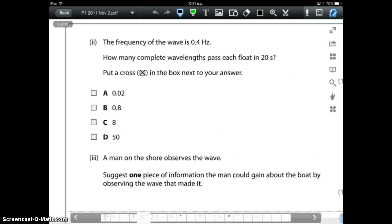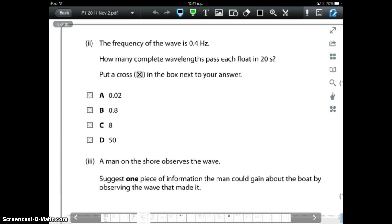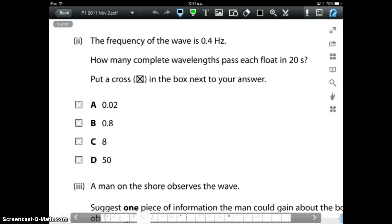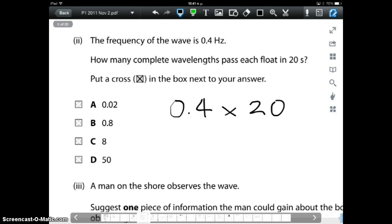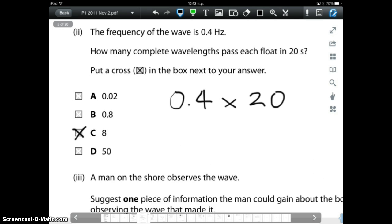Continuing with the question. The frequency of the wave is 0.4 hertz. How many complete waves pass each float in 20 seconds. We need to recall the meaning of frequency. You should be able to recall that frequency is a number of waves passing a fixed point each second. So 0.4 means that 0.4 waves pass by every second. So we multiply by the number of seconds. 0.4 times 20. The answer is going to be 8 waves passing a fixed point, for example, one of the floats each second.